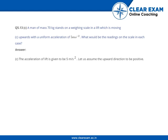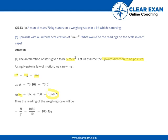The acceleration of the lift is given to be 5 meters per second squared. Let us assume the upward direction to be positive. Using Newton's law of motion, resultant force minus mass into gravity equals mass into acceleration. Putting in those values, we get the resultant force as 1050 Newtons. Thus the reading on the scale would be 1050 divided by acceleration due to gravity, that is 105 kg.